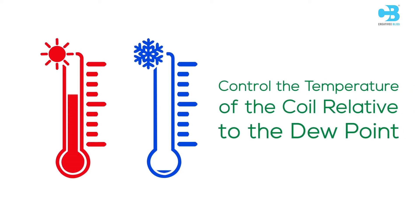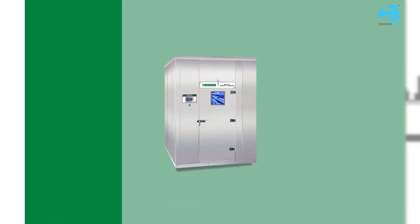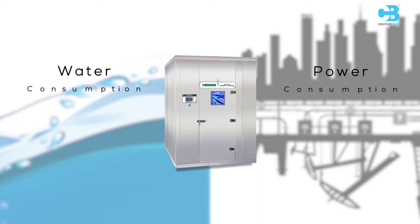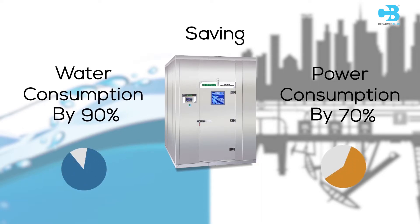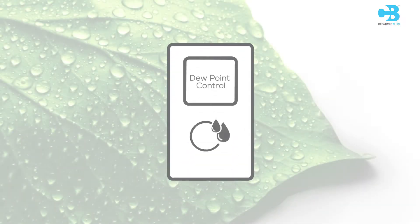Ecotronic System controls the temperature of the coil relative to the dew point. As per the psychrometric chart, this leads to 90% saving in water and 70% saving in power consumption with no humidity loss during short-term door opening or power failure. The dew point control system can be explained better with an example.